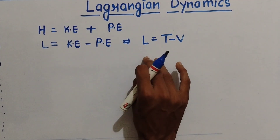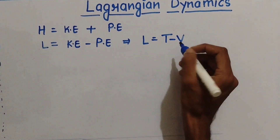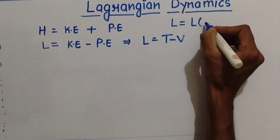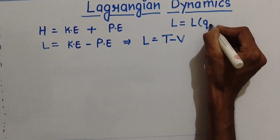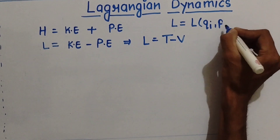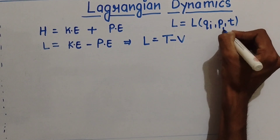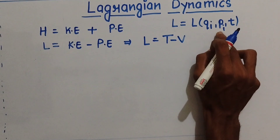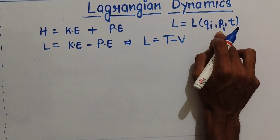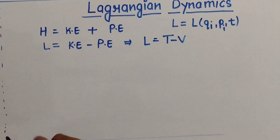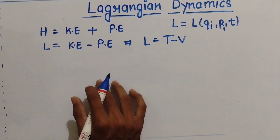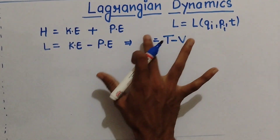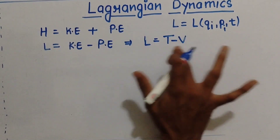How does this come about? I will prove it, but let us suppose that the Lagrangian in phase space is a function of qi, p, and t — where qi is a position coordinate and pi is a generalized momenta coordinate. Now we will see that L equals T minus V. This is how we know that L is equal to T minus V.